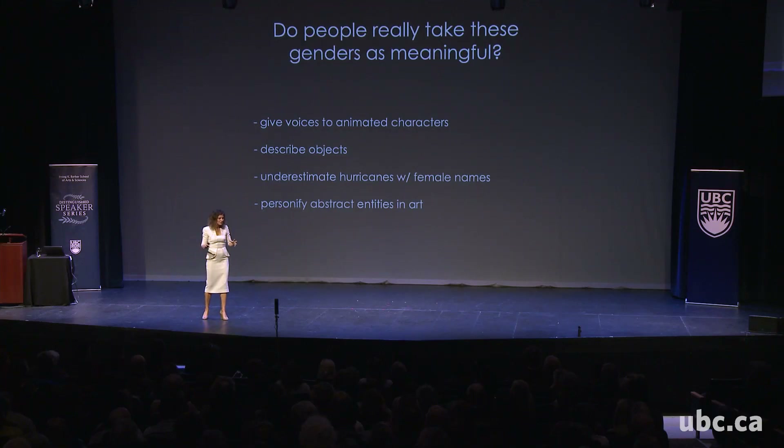If you ask adults to describe objects — 'give us three adjectives that describe a bridge, the first three that come to mind' — people will give you adjectives with stereotypical gender connotations. If the bridge is masculine in your language, you might say bridges are long and strong and towering. If bridges are feminine in your language, you might say they're beautiful and elegant. We're not asking if you'd go on a date with a bridge — we're just asking you to describe a bridge. And yet people give these stereotypically gendered adjectives as their first responses, suggesting that this is something that's alive in their mind.